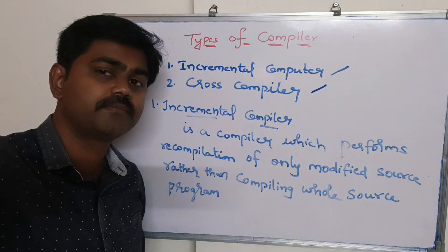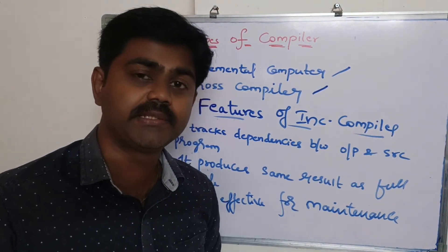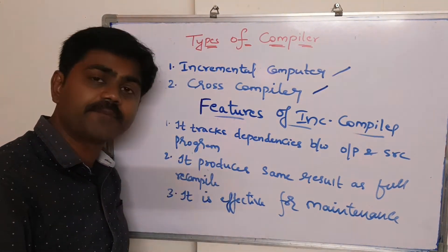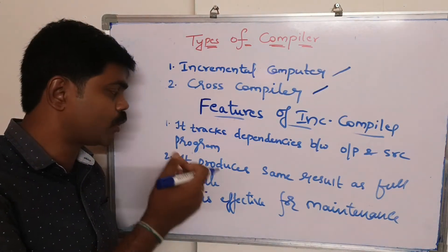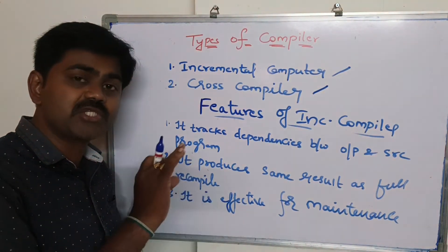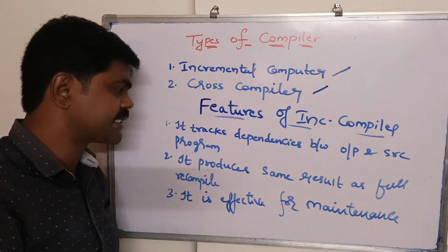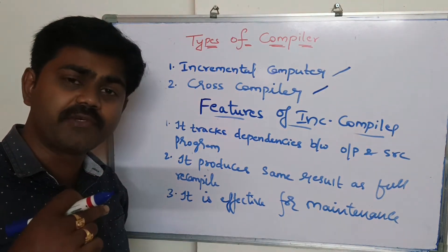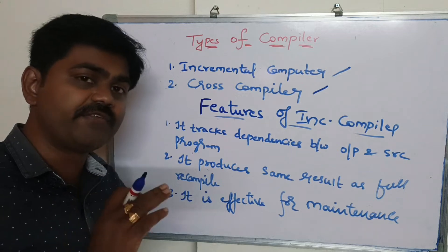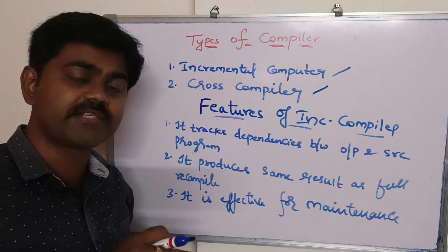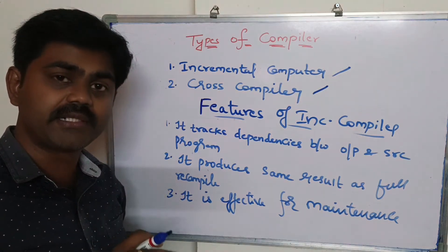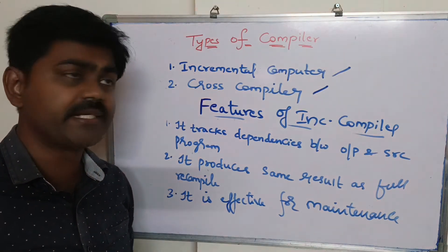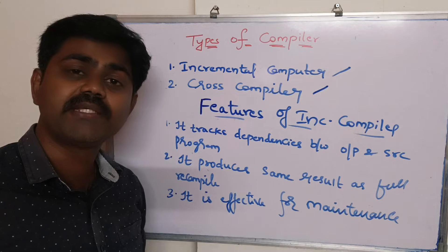Now we will see the features of an incremental compiler. It tracks the dependencies between the output and source program — what are the different dependencies between the output and the source program. It produces the same result as a full recompile: when full recompilation happens, recompiling only the modified source gives the same result. It is most effective for maintenance. This is all about incremental compiler.